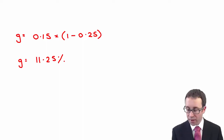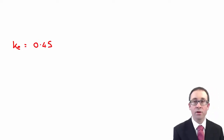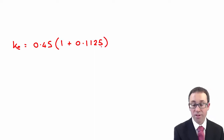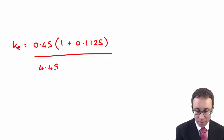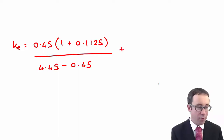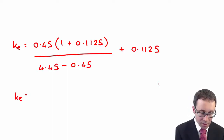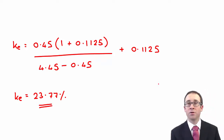Based on that growth rate of 11.25%, we can now work out the cost of equity. The cost of equity takes our dividend of 45 cents ($0.45), multiplied by 1 plus the growth rate of 11.25% (0.1125). Remember, we need to be careful about the ex-div price — from the cum-div price of $4.45 we deduct the dividend to get the ex-div price. Adding on the growth rate, you should be able to work out that the cost of equity is 23.77% to two decimal places.